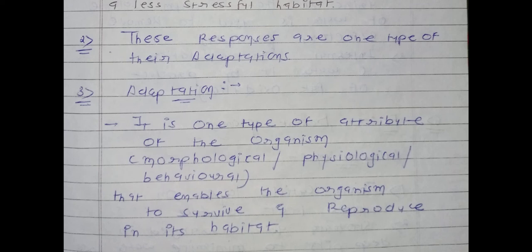Two important things are there: survival and reproduction. If an organism is able to survive in a particular habitat and able to do reproduction in that habitat, it is known as adaptation. For example, if a camel is able to survive in a desert and able to reproduce in a desert, then camel is adapted for desert ecosystems. Similarly, if fishes are able to survive and reproduce inside water, then they are adapted to the water ecosystem.